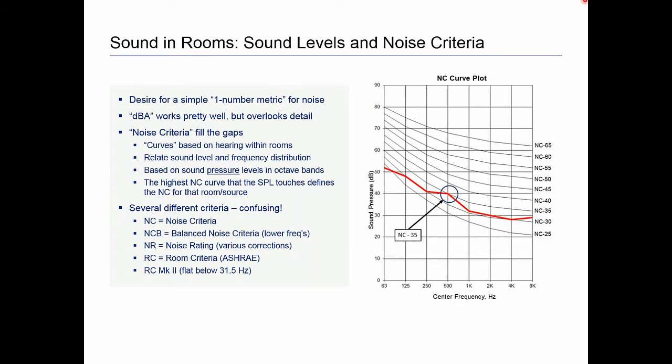There are lots of different ways to describe sound in rooms, and several are most common in HVAC work. Often there's a desire for a very simple one-number metric. dBA — a sound level in dBA in a room — is a pretty good descriptor. It works relatively well, correlated to how annoyed people will be: lower levels mean less annoyance, higher levels mean more annoyance. But dBA doesn't really describe the timbre or quality of the noise, or its frequency spectrum content.